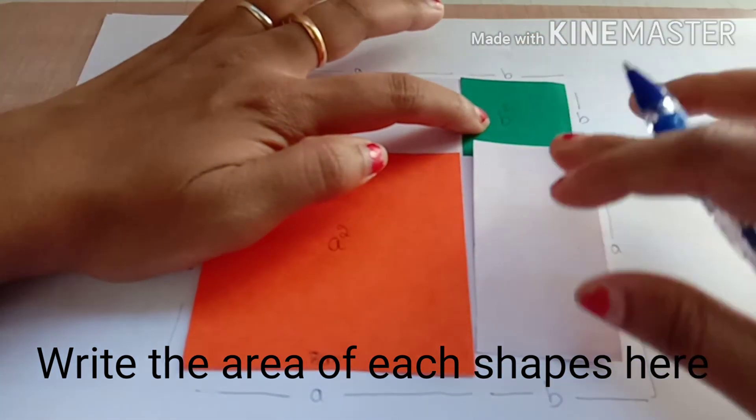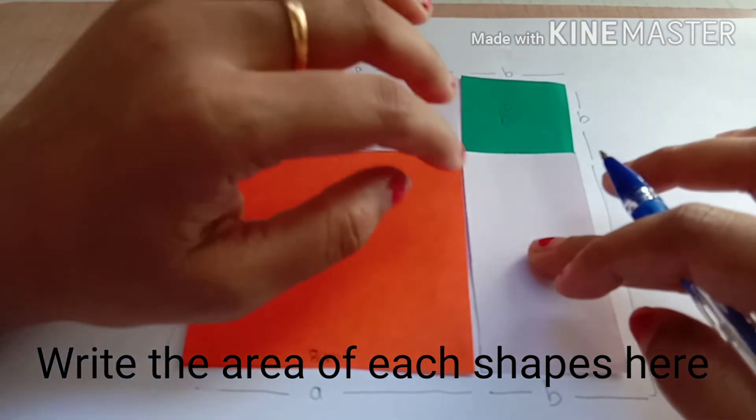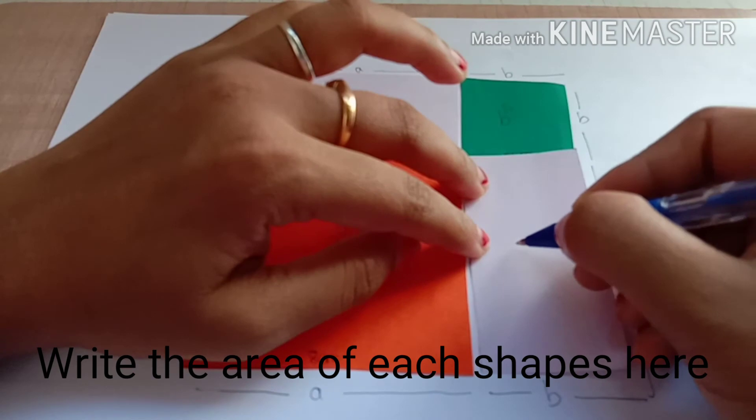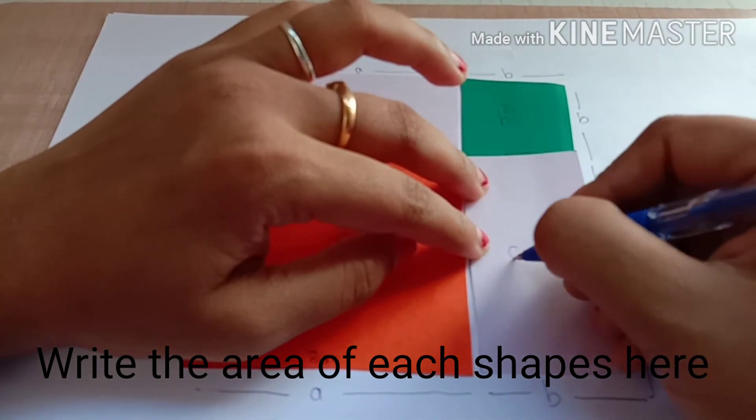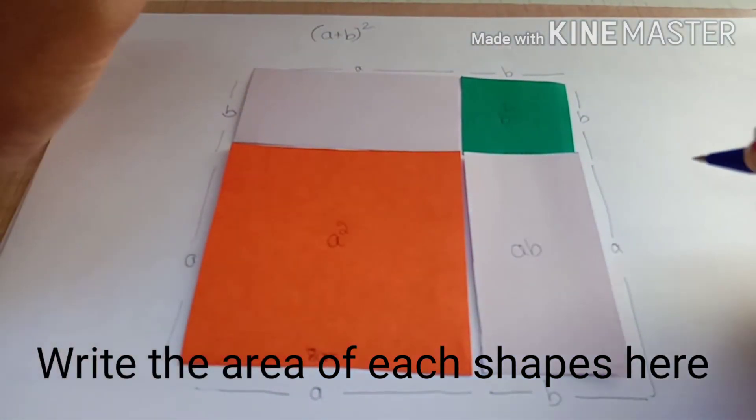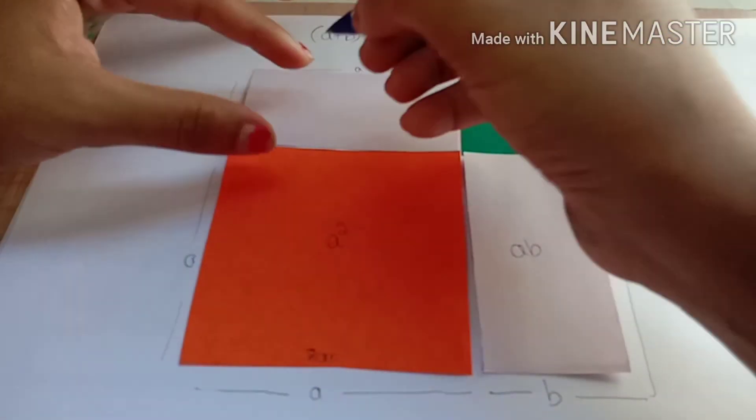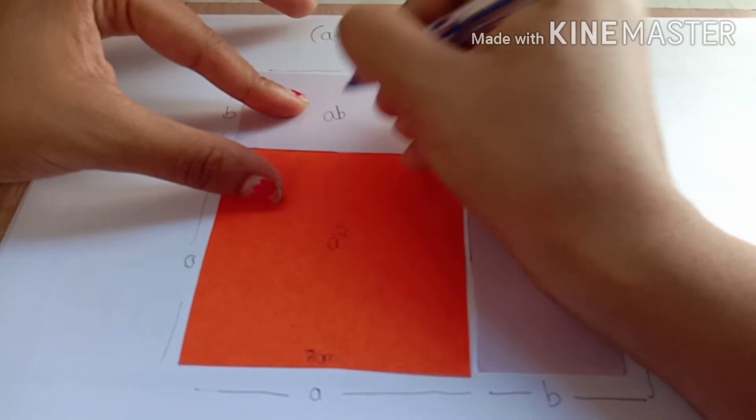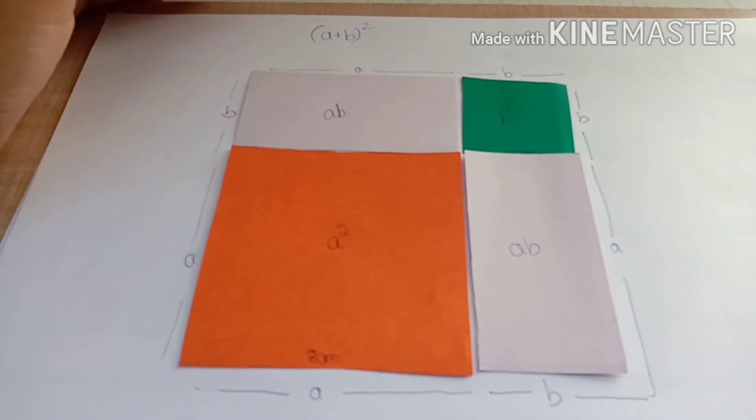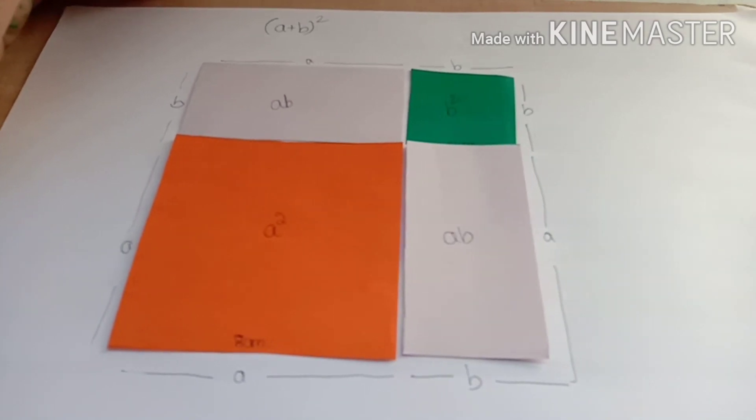And it is a rectangle, so the area of a rectangle will be length times breadth, so a times b is ab. Similarly, the area of this rectangle will be a times b.